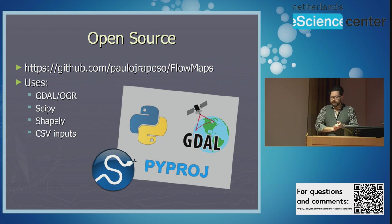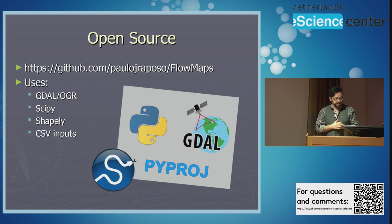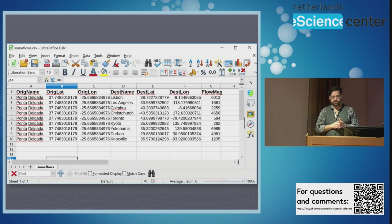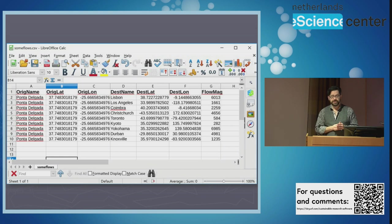It's open source, it's on GitHub, it's free — feel free to use it. There's the URL. It uses a lot of the usual suspects: GDAL, of course, SciPy, Shapely. And it takes a CSV input — pretty simple CSV input — which I decided to do for the sake of universality. That's a very easy format to produce, even if your data is not already in that format.